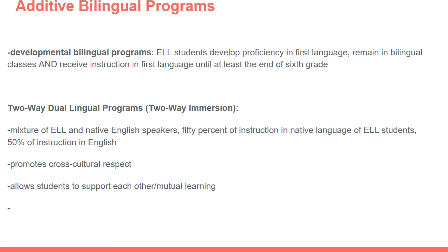We also have two-way dual language programs, also called two-way immersion programs. Here you have a mixture of ELL students and native English speakers, with 50% of instruction in English and 50% in the native language of the ELL students, such as Spanish. This model promotes cross-cultural respect between both groups, allows students to support each other, and supports mutual thinking. Native English speakers learn Spanish as their second language, and ELL students keep their native language while developing English as their second language.